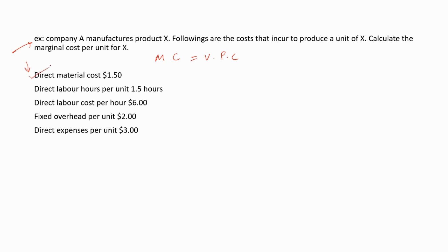Direct material cost — this is a variable production cost. Direct labor hours per unit: they have given the direct labor hours taken to produce one unit, and the direct labor cost — this is a variable production cost. They have also given the fixed overhead per unit. Do we consider this under marginal cost? No, because we only consider the variable production cost, and this is a fixed cost. So this information is not relevant to this calculation. Then they have given the direct expenses per unit — this is a variable production cost.